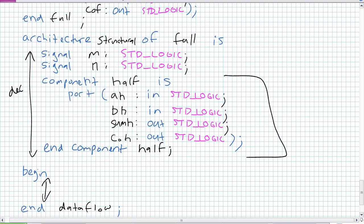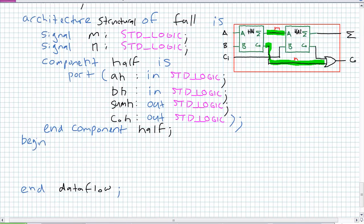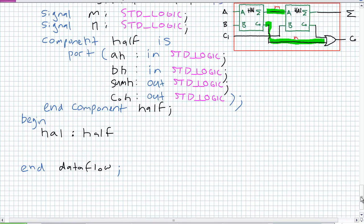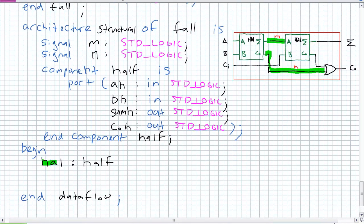Declaring internal signals, declaring which component we're using — the half adder — and declaring what the input and output ports are for that component. Now let's hook things up. First, give the two half adders a name. Since I've called them HA1 and HA2, let's call them that. This is component instantiation. Give the name HA1, colon, it's a 'half'. That name is the component you defined previously.